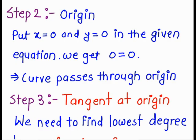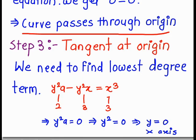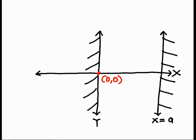In step number 2, we check whether the origin is a point on the curve, and here we get that the curve passes through the origin. In step number 3, we find the tangent at origin and we get that the x-axis itself is the tangent at origin.